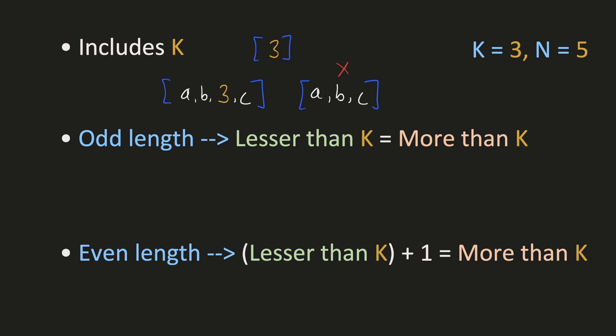The length of the subarrays can either be even or odd. In the case of odd-length subarrays, if we sort the numbers in ascending order, k should lie exactly in the middle. Hence, there should be an equal count of numbers which are lesser than k and also greater than k. This also includes the subarray where k is the only element — the count of both lesser and greater numbers is 0, so they are equal.